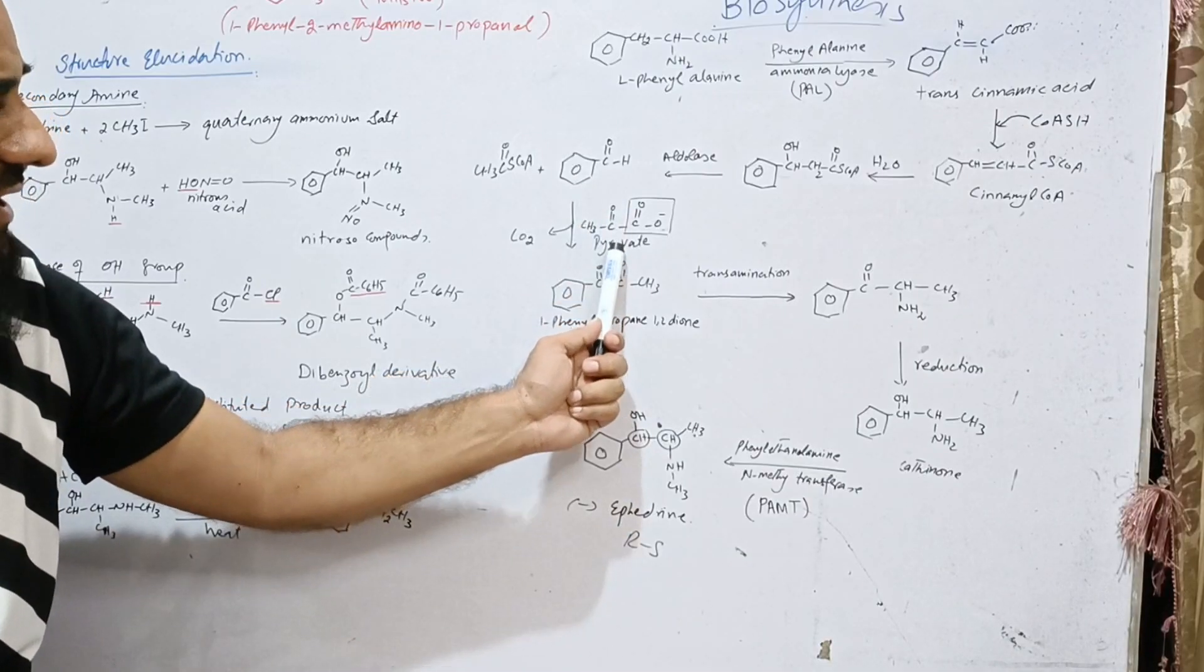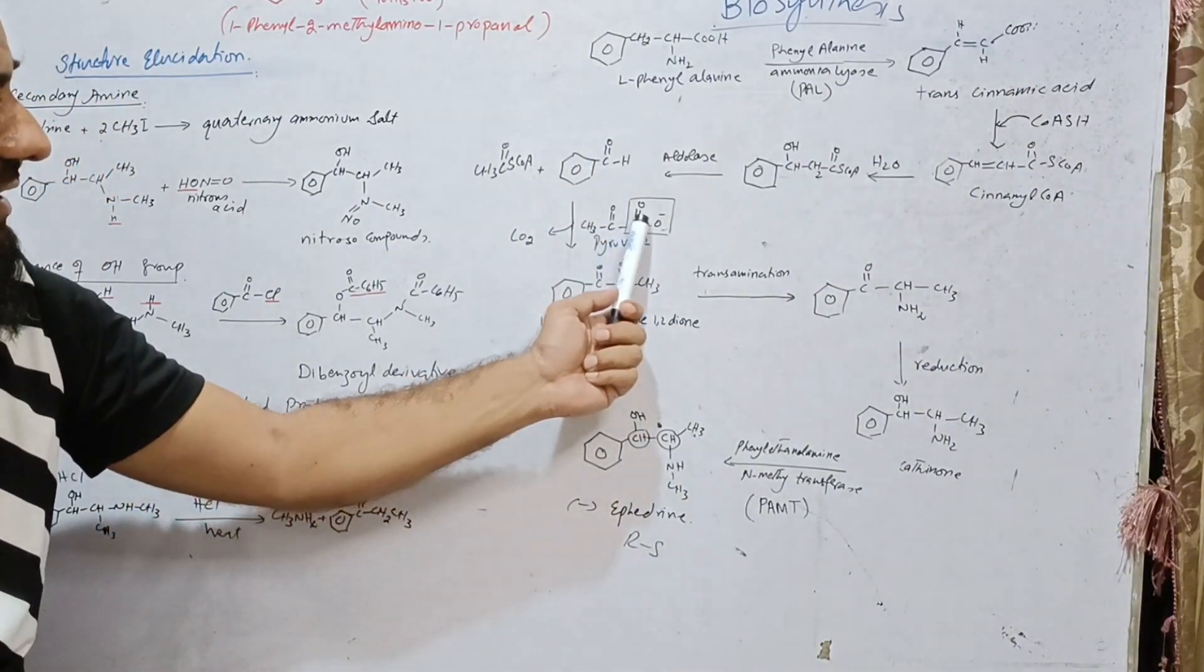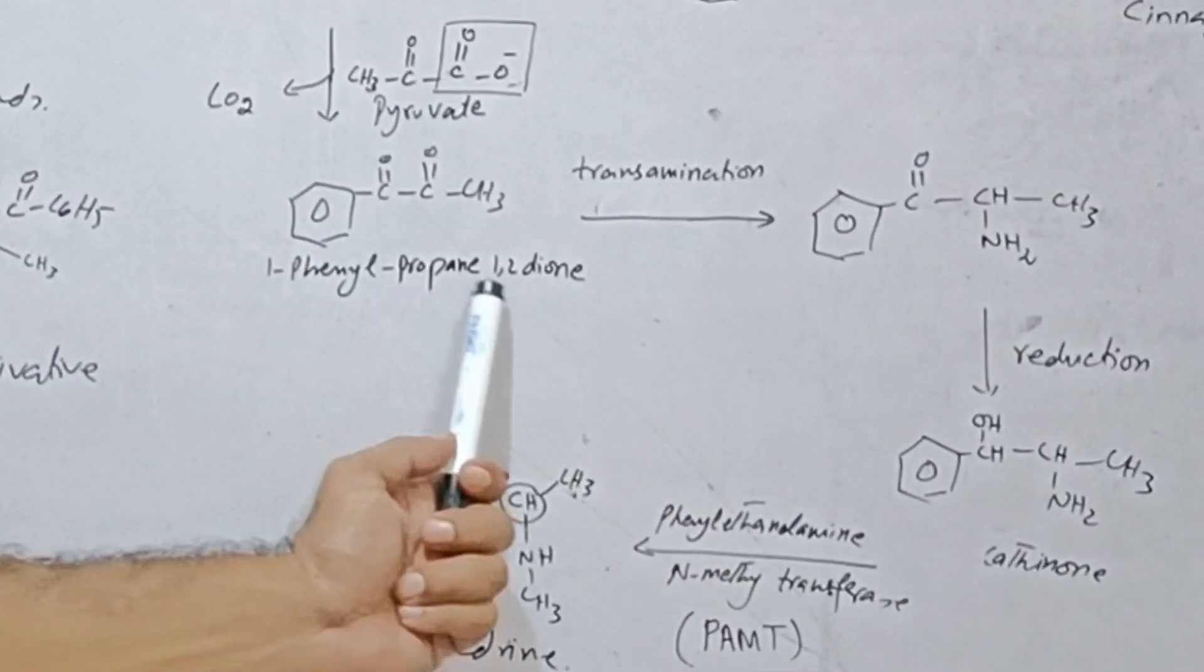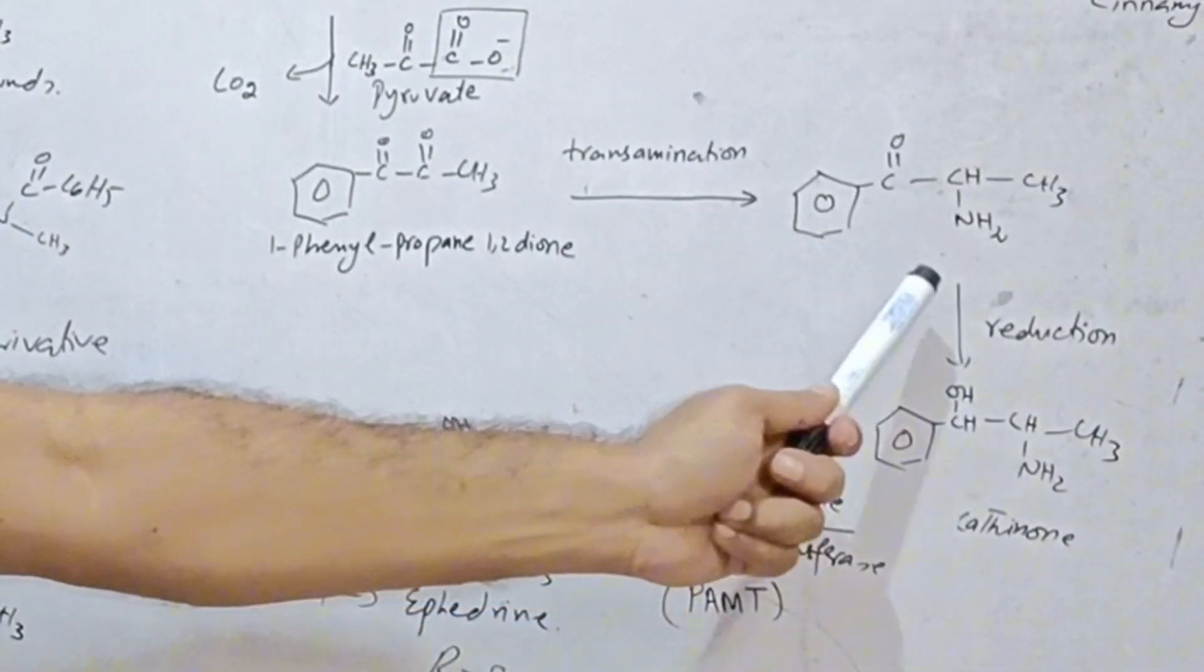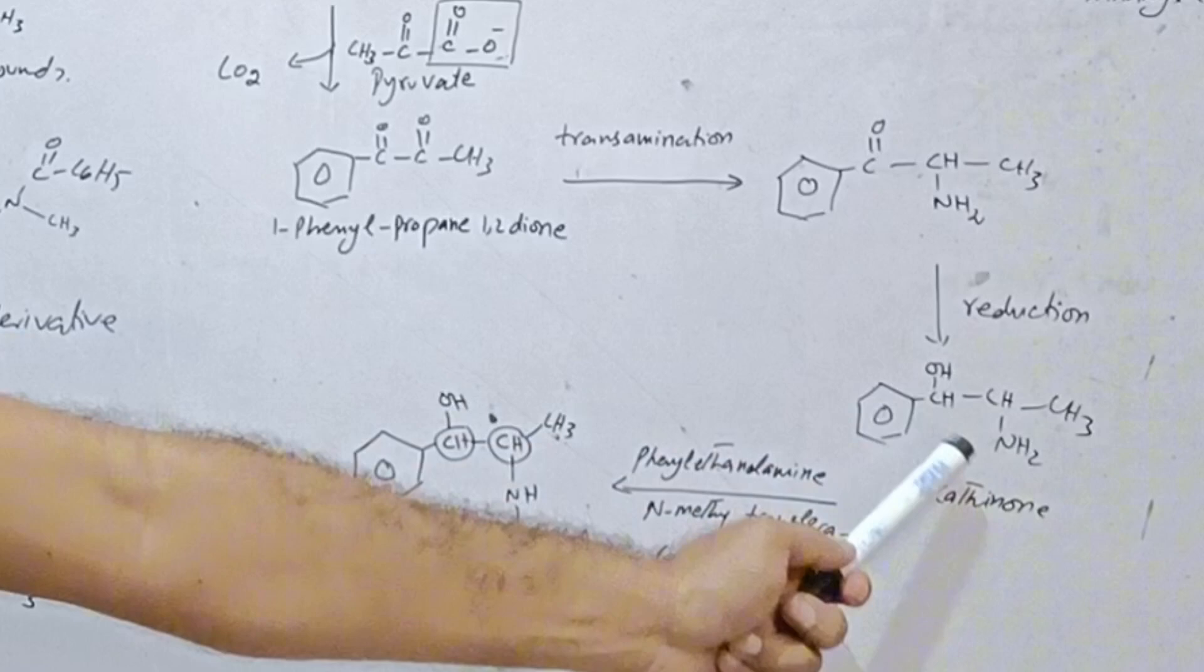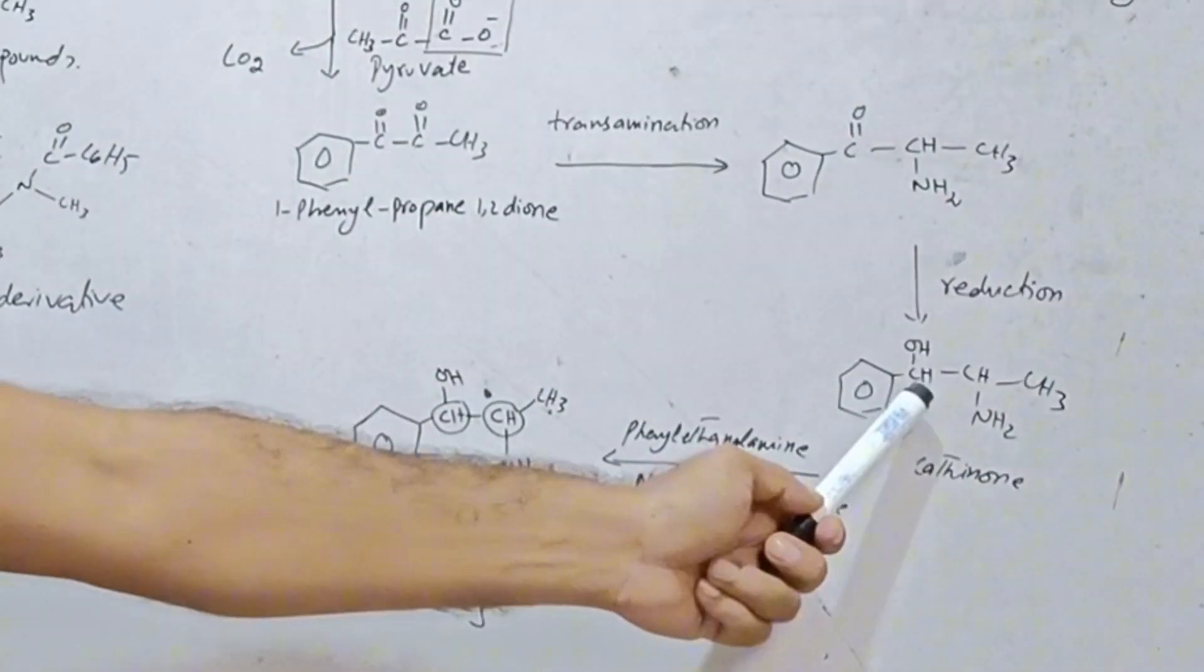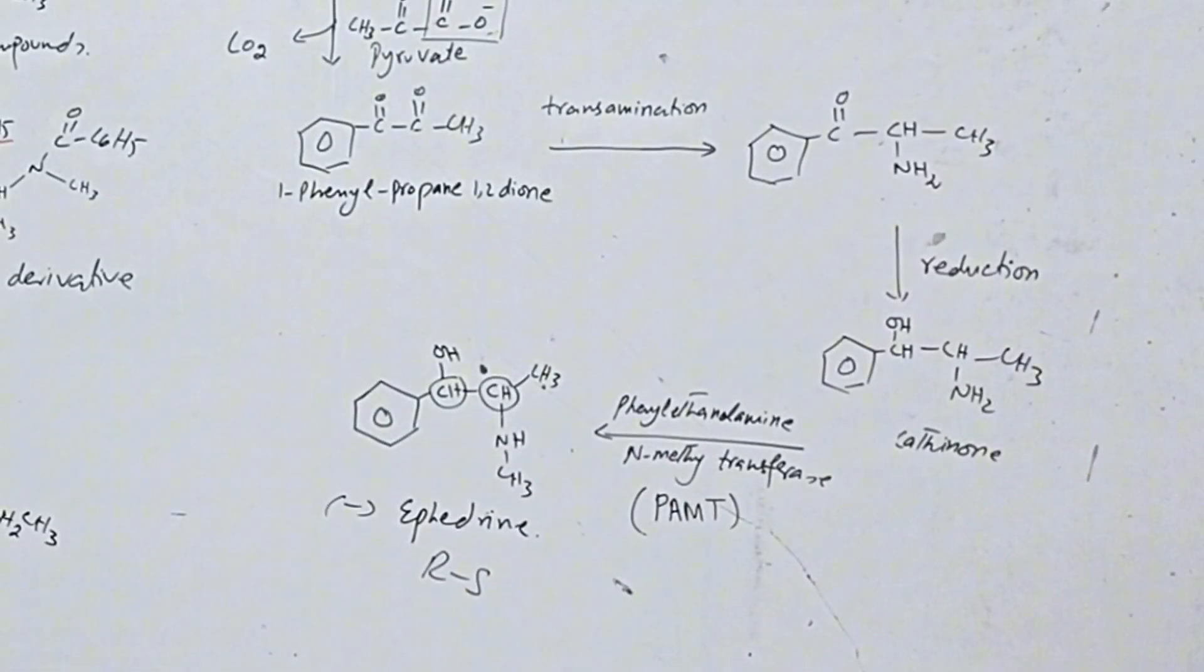Benzaldehyde reacts with pyruvate. And decarboxylation takes place and we get 1-phenyl propane-1,2-dione, diketone. Diketone undergoes transamination. We get this and this structure undergoes reduction. We get cathinone. If we see the stereochemistry, then we get cathinone plus and minus. But here,